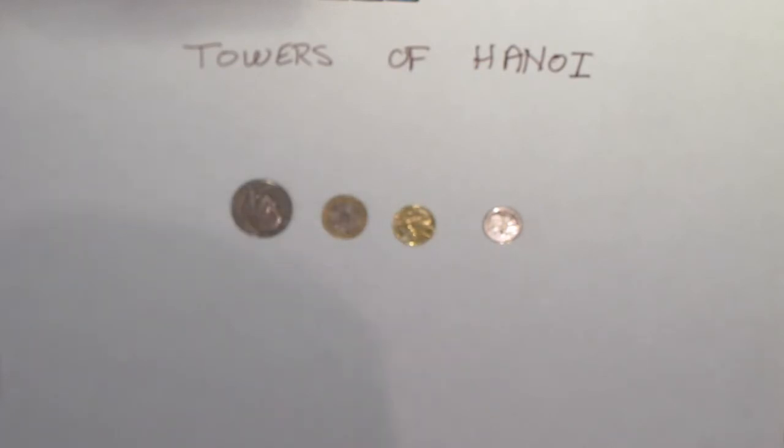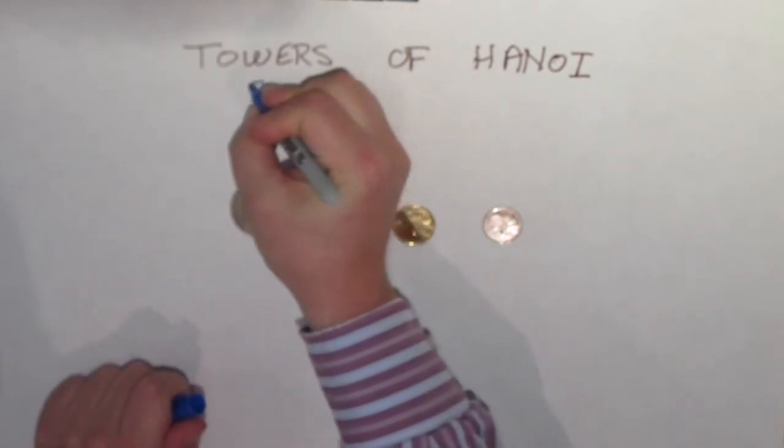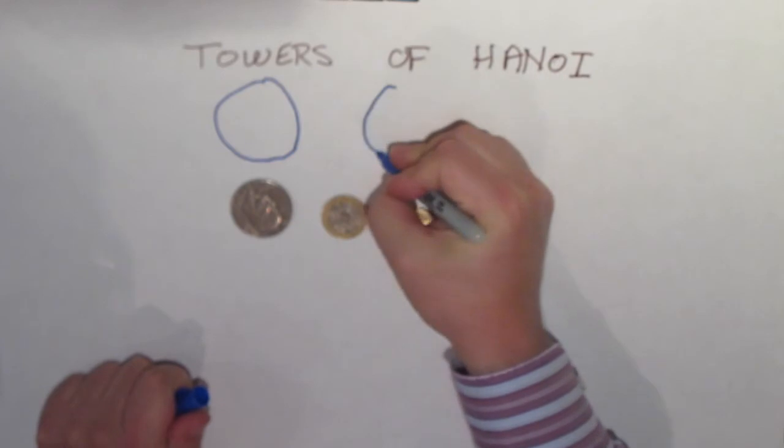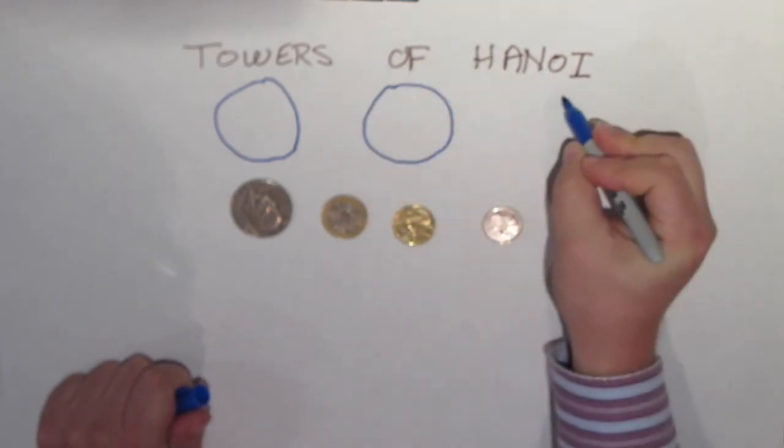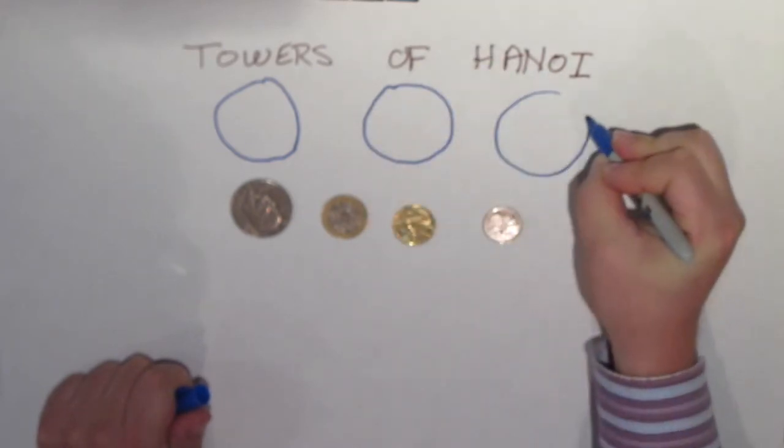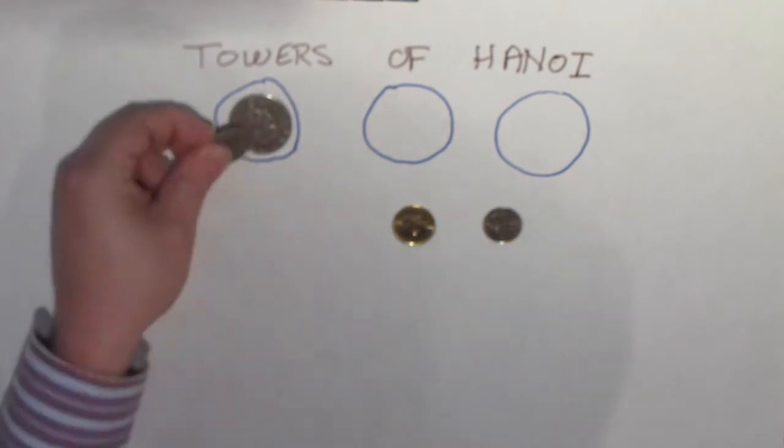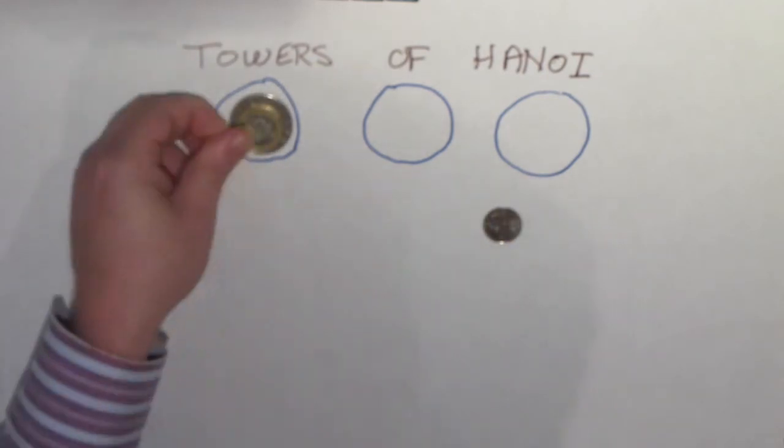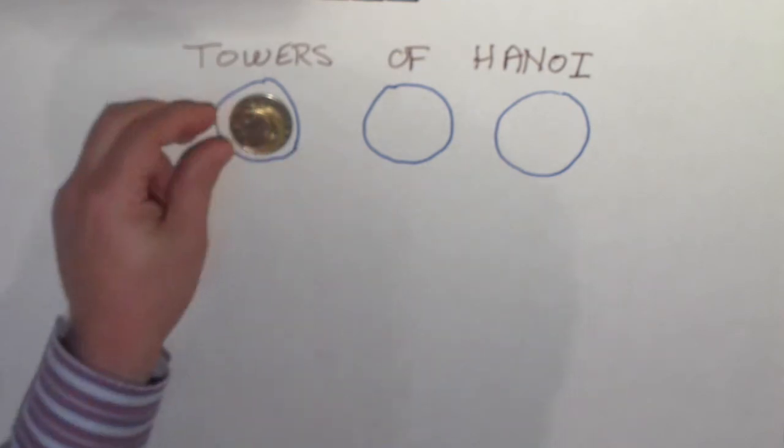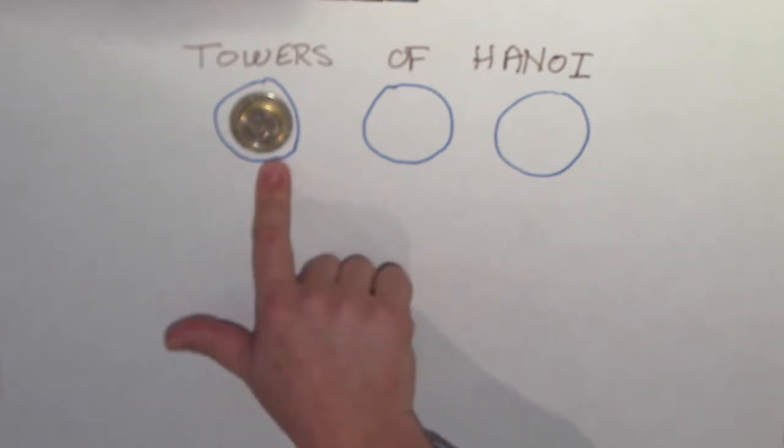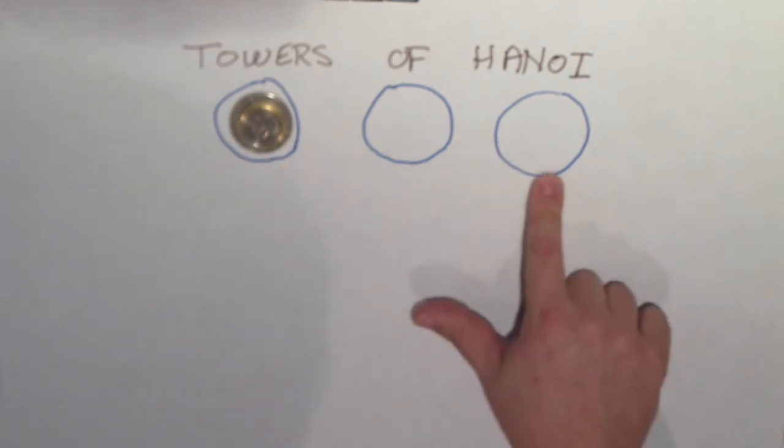So this is a very simple puzzle. I start by just drawing three circles, it's called the Towers of Hanoi. Then I'm going to stack my four coins, a nice little stack, the biggest one on the bottom, in the one circle. And the job is to get the stack of coins from this circle to this circle.